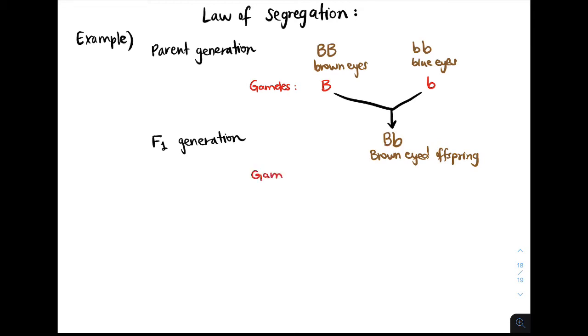Now, the F1 generation will produce gametes in which half have the big B allele and half have the little b allele.